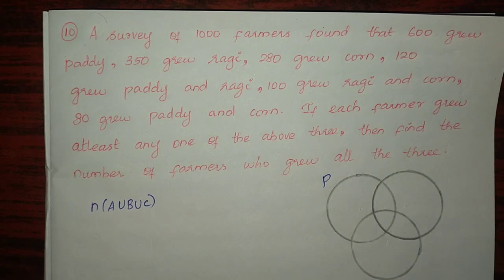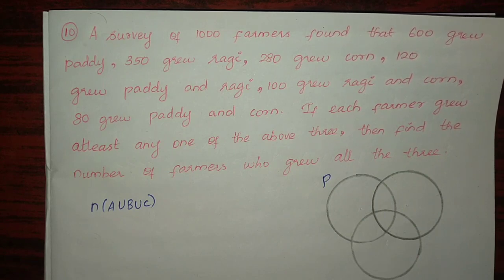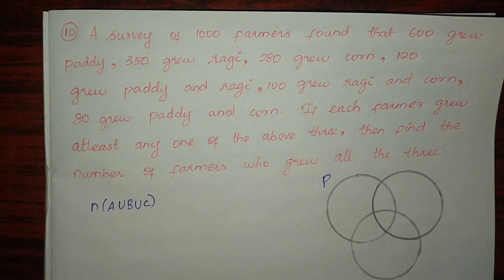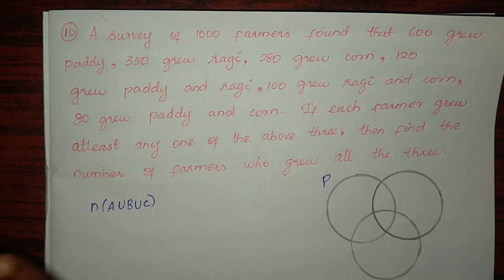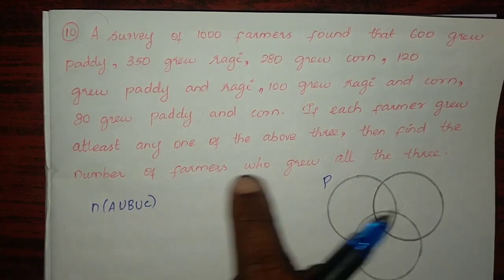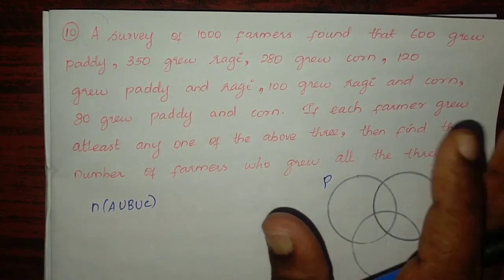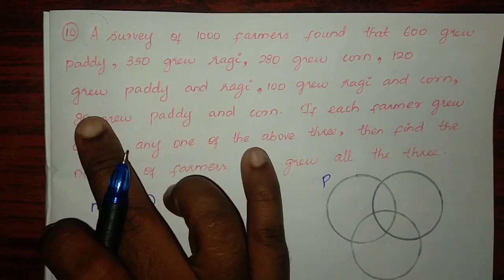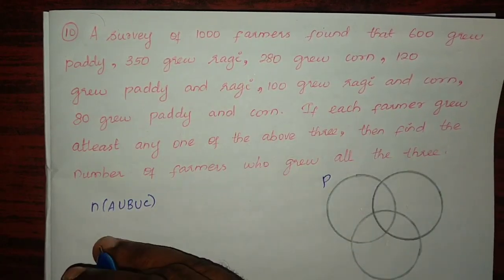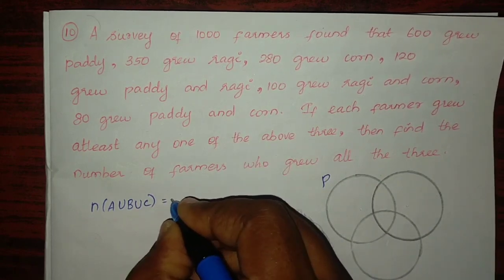New problem: Survey of 1000 farmers found that 600 grew paddy, 350 grew ragi, 280 grew corn, 120 grew paddy and ragi, 100 grew ragi and corn, 80 grew paddy and corn. If each farmer grew at least one of the above three, find the number of farmers who grew all three.